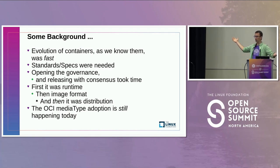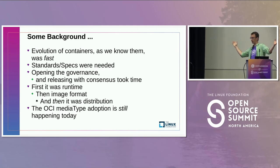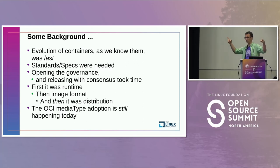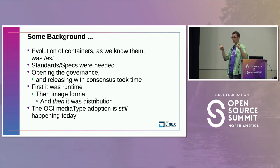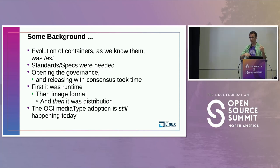If anybody touched containers in the early days — does anybody remember the days before the checksum was actually a real checksum? In the early days when you would Docker build something, it just dd'd a little bit off of /dev/urandom and checksummed that. That was the ID of the image — completely not content-addressable at all. So there were big iterations over time to where you could actually trust and have predictability about it.